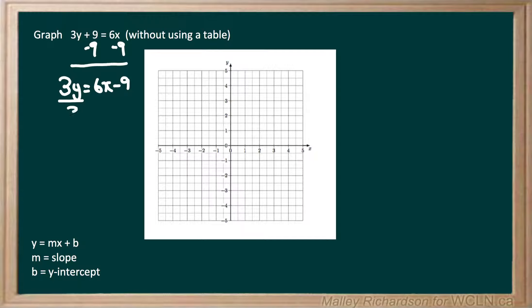Now to get the y by itself, we want to divide both sides by 3. So we're left with y equals 6x minus 9 over 3.